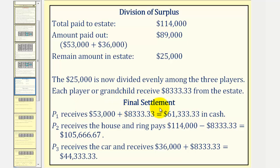Therefore for the final settlement, player one receives a total of $61,333.33 in cash. Player two receives the house and the ring but ends up paying a total of $105,666.67.